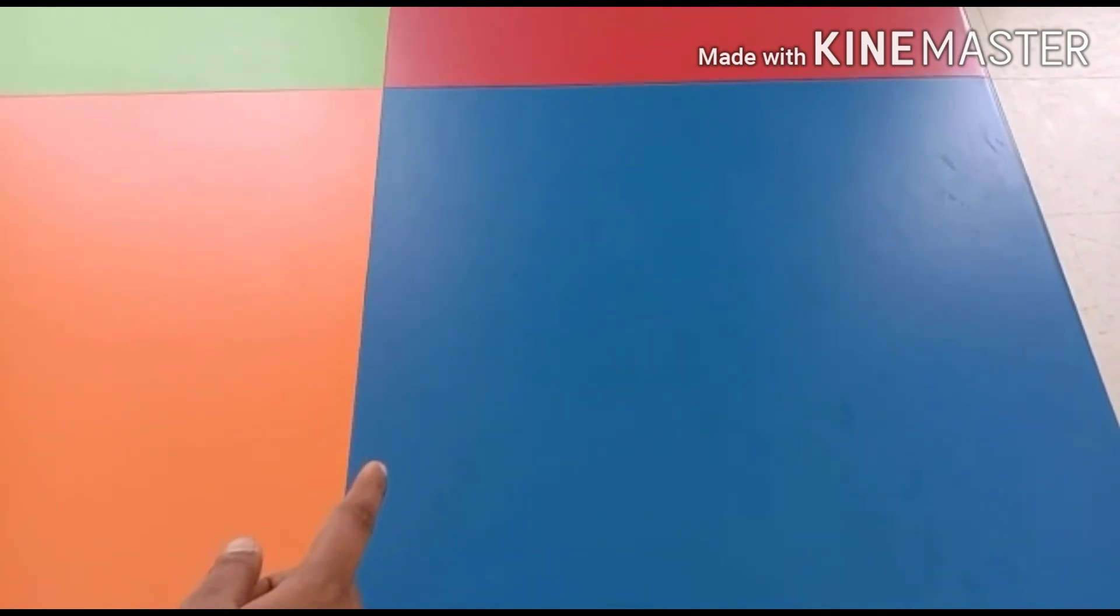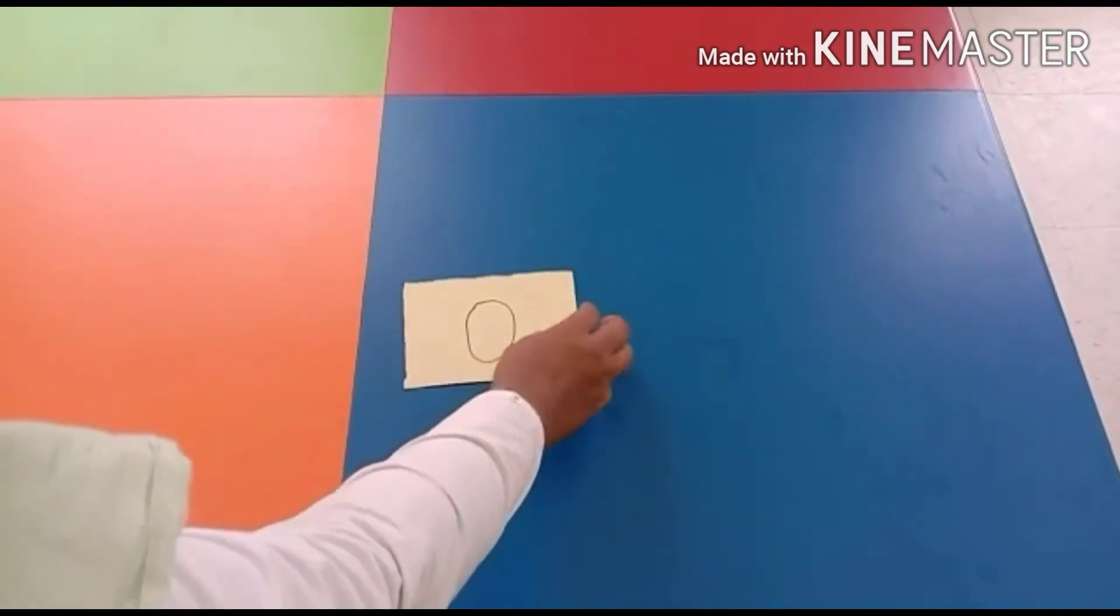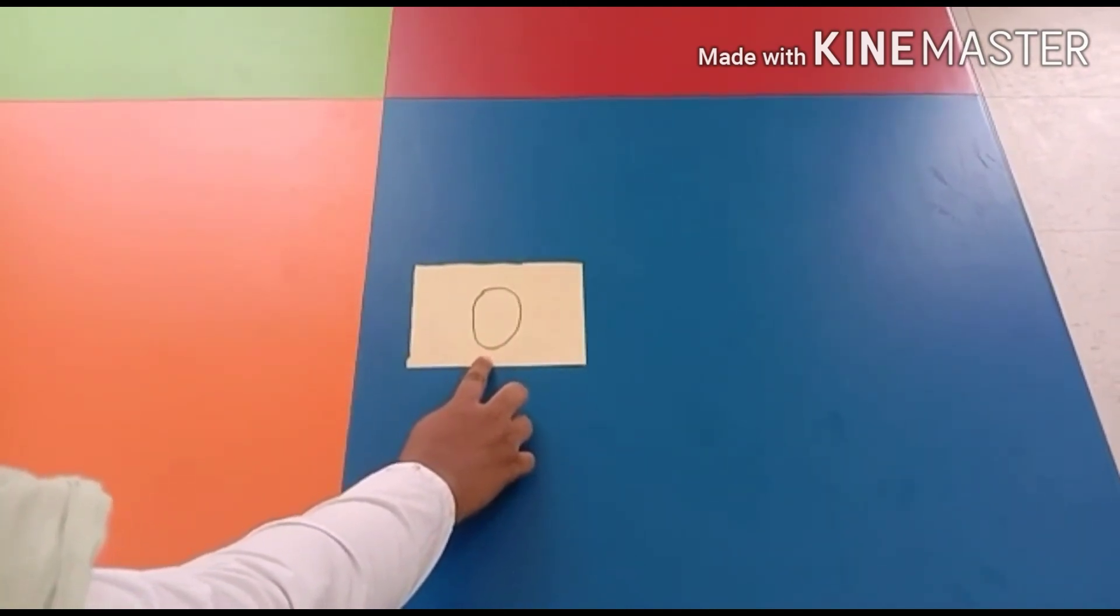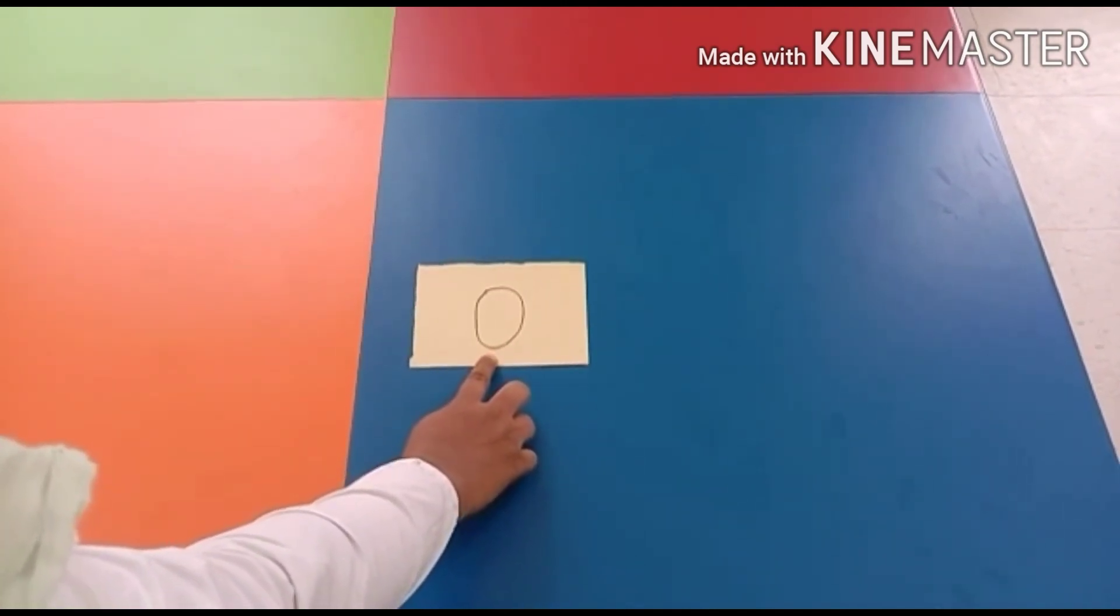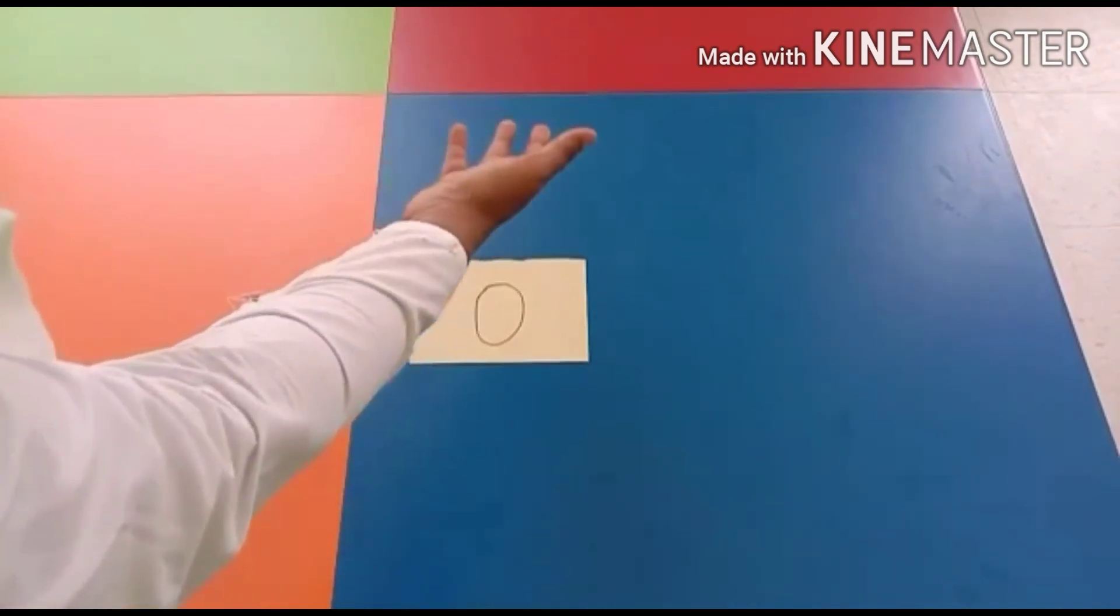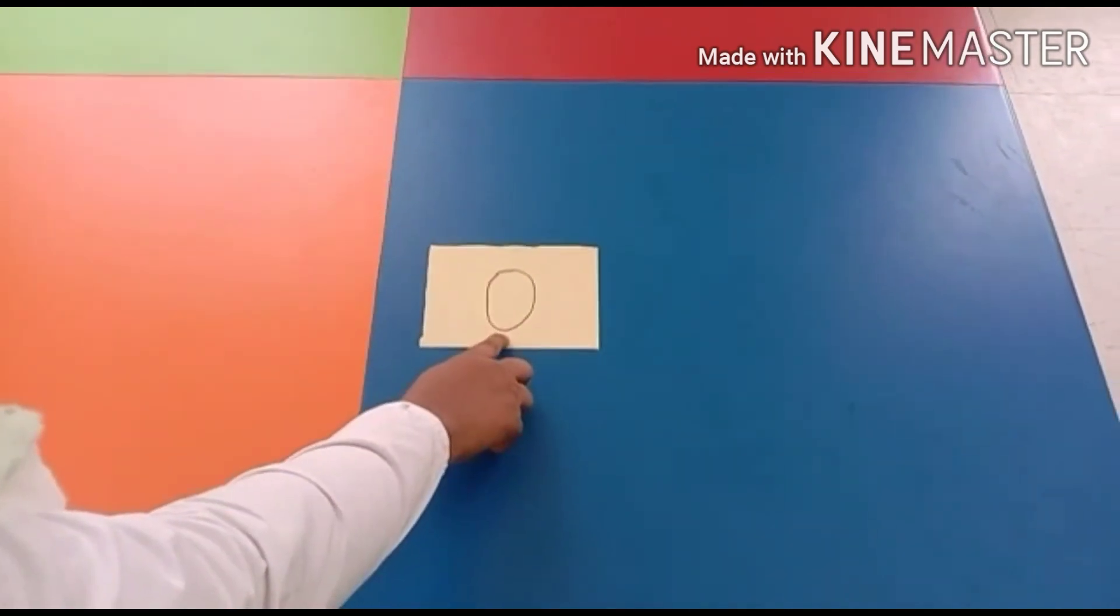Zero can be written like this. So this is zero. We don't have any quantities, so I have written zero.